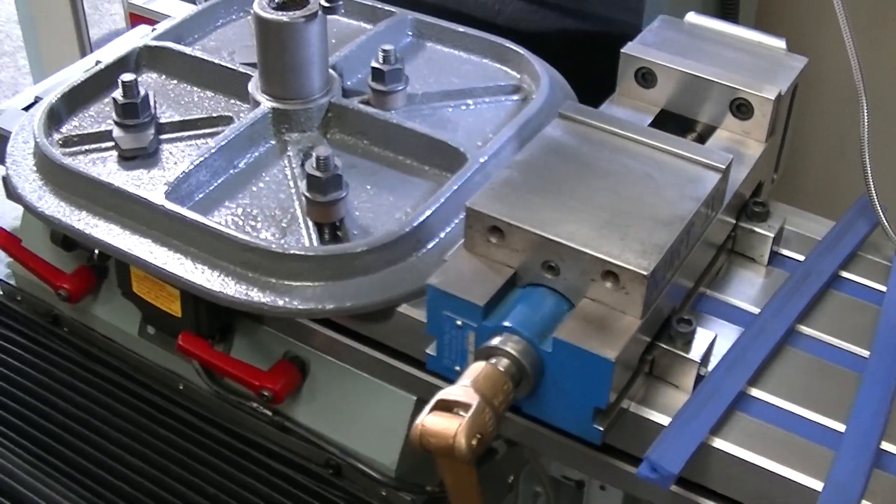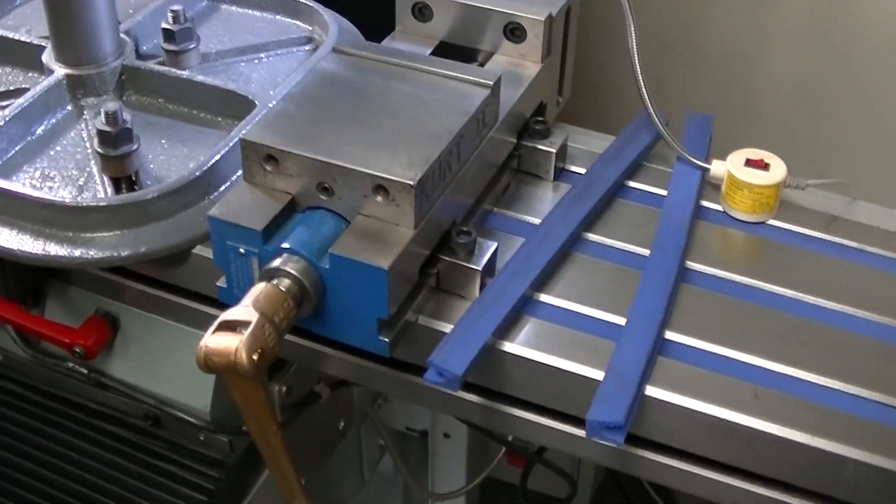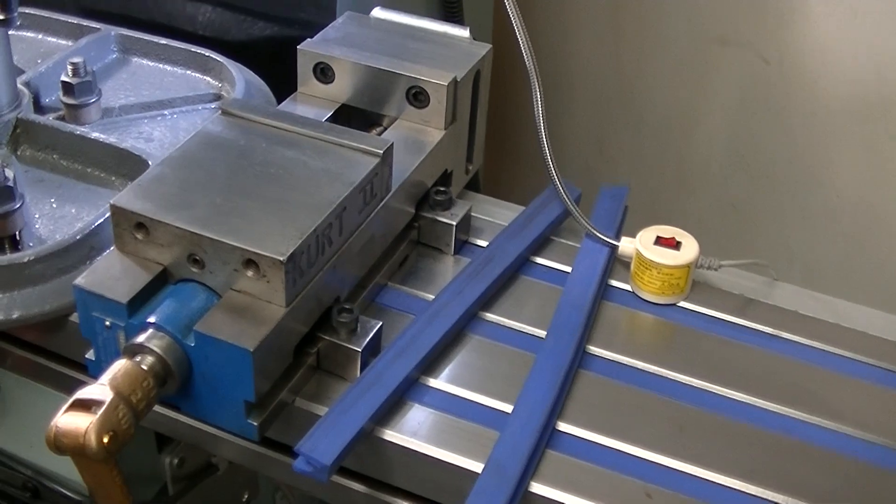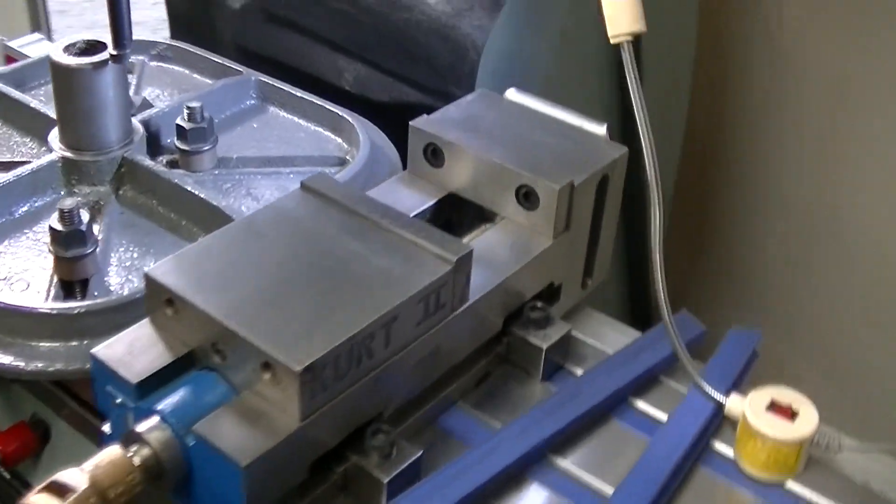I have a small four inch CNC Kurt vise on there. Ideally a six inch would be better, but I sold all my six inch vises, so I've been playing around with this one and I really quite like it.